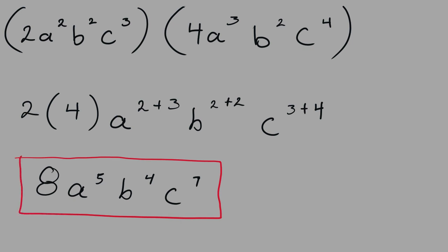To multiply variables with powers, we simply multiply the coefficients and then add the exponents on the variables that are alike.